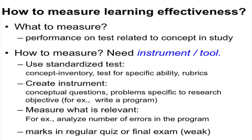Now let us look at the first one — learning effectiveness. Typically, if you want to measure learning effectiveness, what you need to measure is performance on some test related to the central idea or concept in the study. This test could be a paper-and-pencil test or a performance test. The test has to be consistent with your goal: if you want to measure domain understanding of convolution, your test must have concepts on convolution; if you want to measure acquisition of design skills, the test should measure performance in design skills.